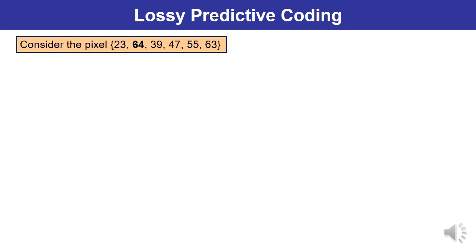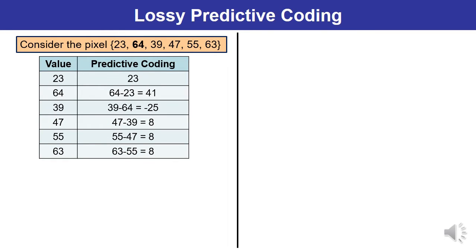Let us consider set of pixels. Here you can see that six pixels have been taken. Now let us discuss the lossy predictive coding. First you have to plot a table with the values and their predictive coding. In one column all the values have been taken while in the other column predictive coding have been plotted over here. You can see in this particular case, this second case, 64 minus 23. You are getting 41.